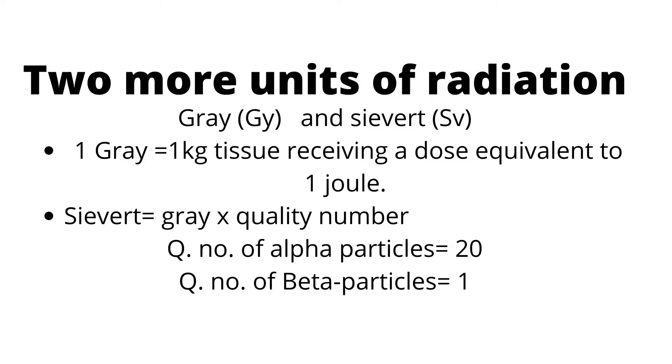The quality number of an alpha particle is 20, while a beta particle has a quality number of 1. So, alpha particles are more dangerous than beta particles.